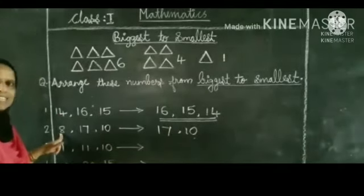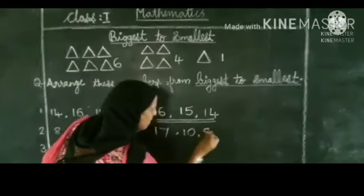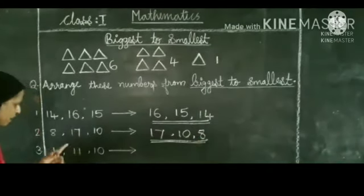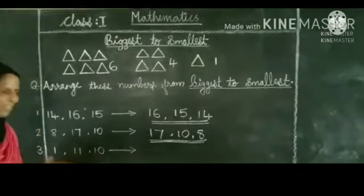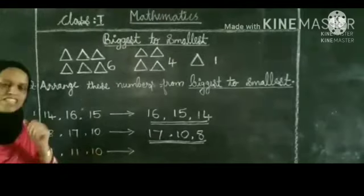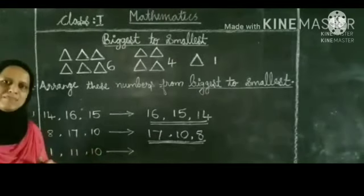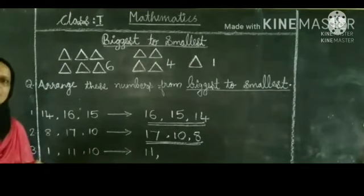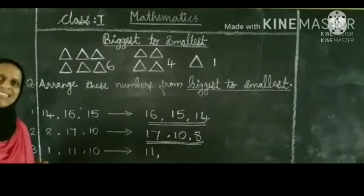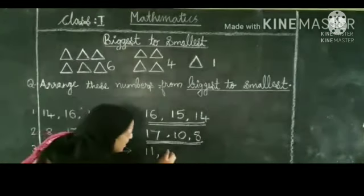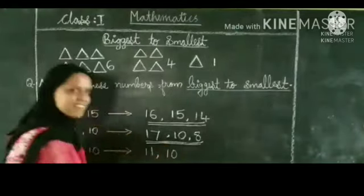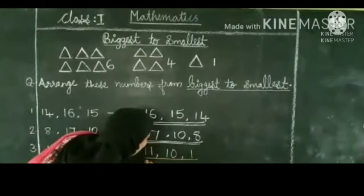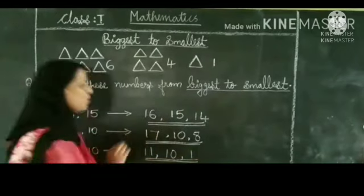The third question: 1, 11, 10. From these three numbers, which is the biggest? That is 11, so write 11 first. Then the bigger of the remaining numbers is 10, so write 10 in second place. The third place is 1. That is the order from biggest to smallest: 11, 10, 1.